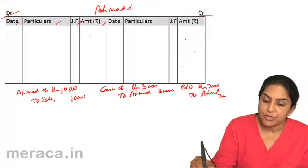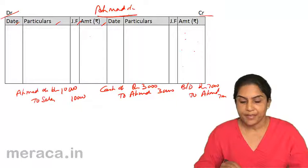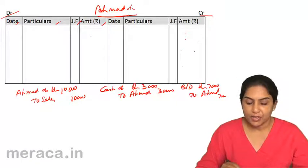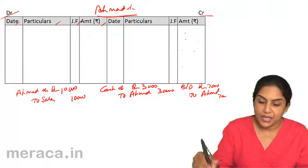Suppose Ahmad's account was to be prepared here. What is the method? Ahmad's account debit. So we come, this is Ahmad's account.